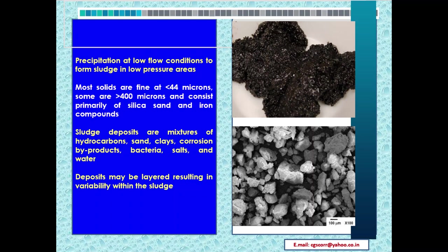Precipitation at low flow conditions can form sludge in low pressure areas. Most solids are fine at less than 44 microns; some are greater than 400 microns and consist primarily of silica, sand and iron compounds. Sludge deposits are mixtures of hydrocarbons, sand, clays, corrosion by-products, bacteria, salts and water. Deposits may be layered, resulting in variability within the sludge. Images show a sludge sample and a scanning electron micrograph of the sludge.